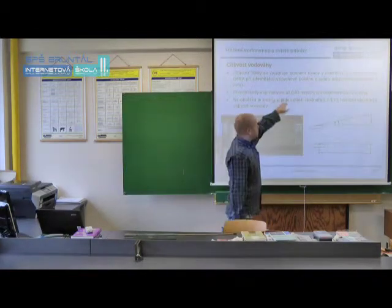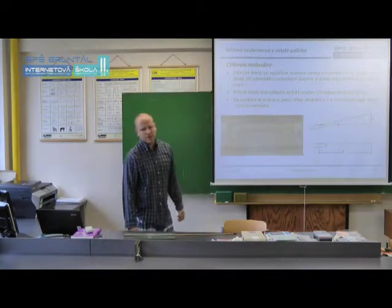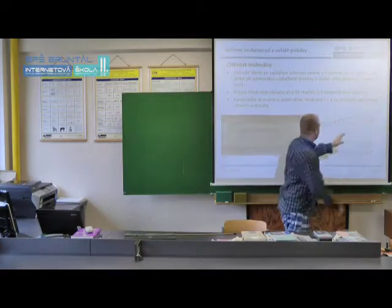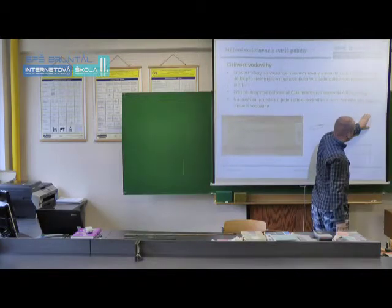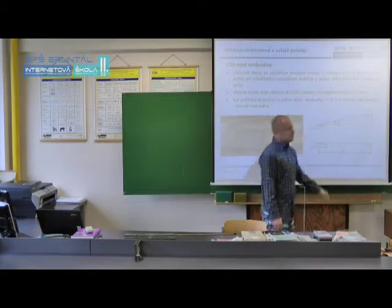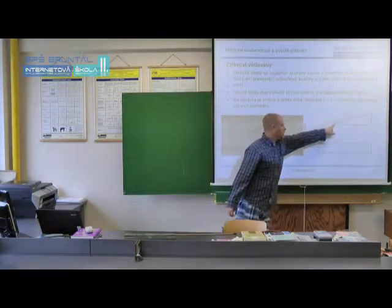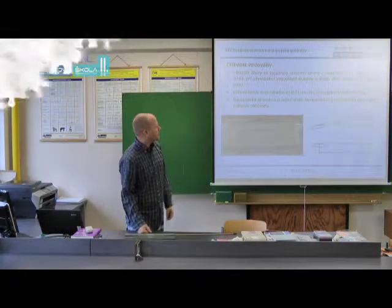Precise libels have sensitivity up to one hundredth of a millimeter per one meter of length. Transferring this to the diagram, here we have one meter of length and this value would be exactly one hundredth of a millimeter, and this value corresponds to epsilon, which would have a value of two arc seconds. This is the sensitivity of the libel.